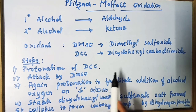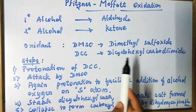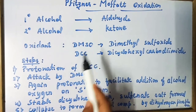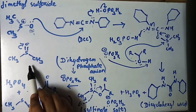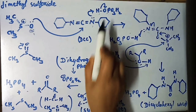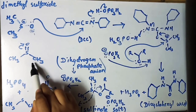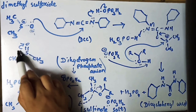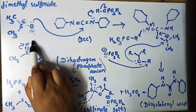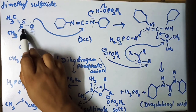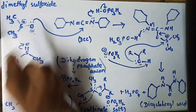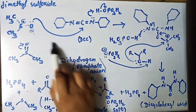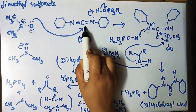Let's see the detailed steps for the Pfitzner-Moffat Oxidation by DCC and DMSO. This is dimethyl sulfoxide, this is DCC, and this is phosphoric acid. Now the dimethyl sulfoxide oxygen is an electronegative atom, so it will attack the bond electrons and a negative charge will develop. This sulfur will develop a positive charge. Now the lone pair of electrons will attack the DCC carbon.